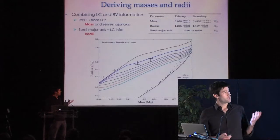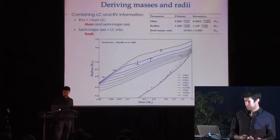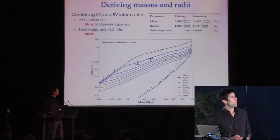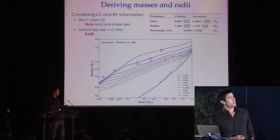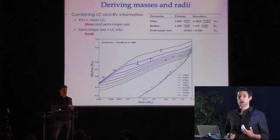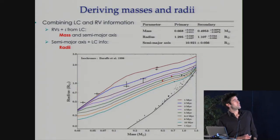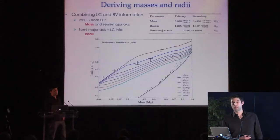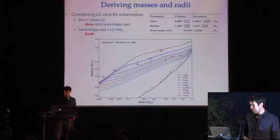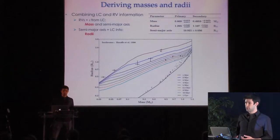We can now go back to the mass-radius relation and plot this system. The first thing to note is the relatively small error bars, which really shows you the power of space photometry. Second, it lies in a relatively sparsely populated region of the diagram, highlighting its importance in constraining models of stellar evolution.